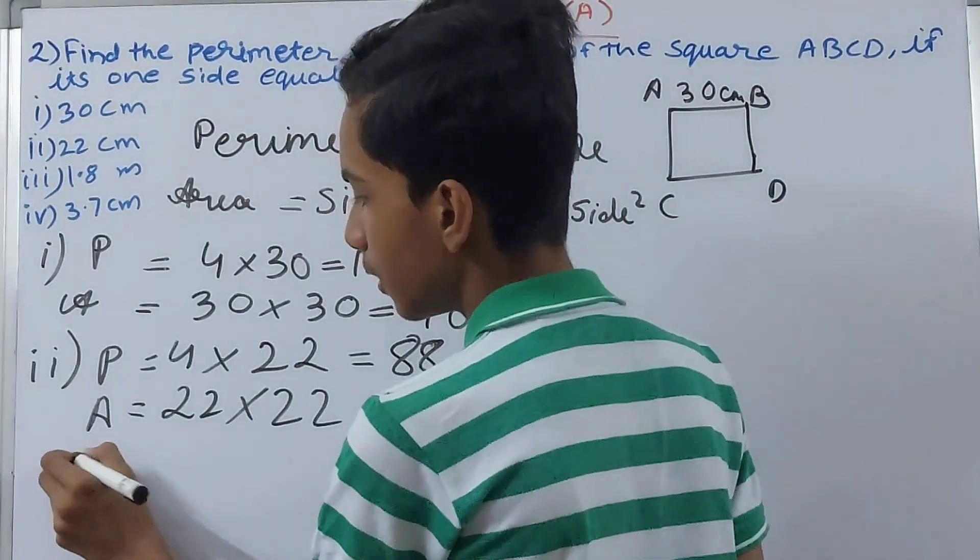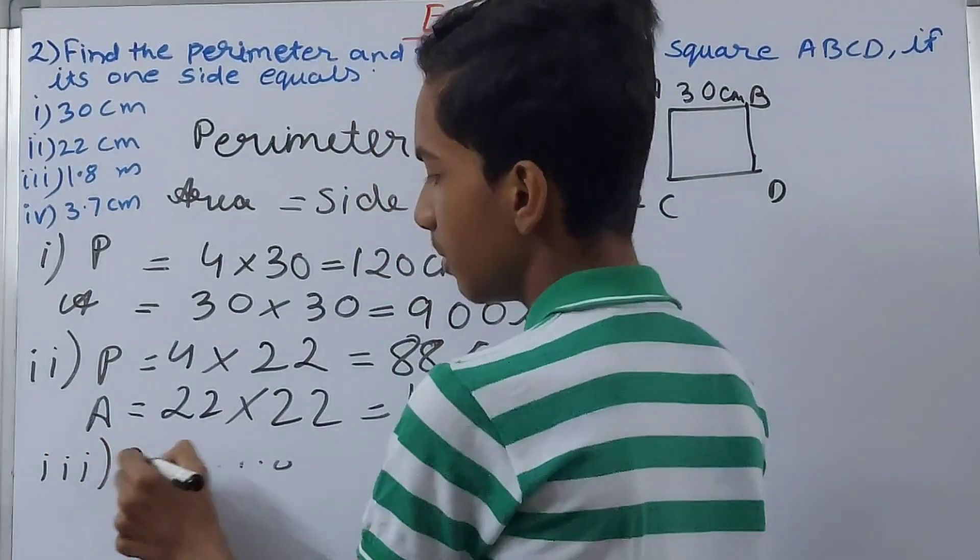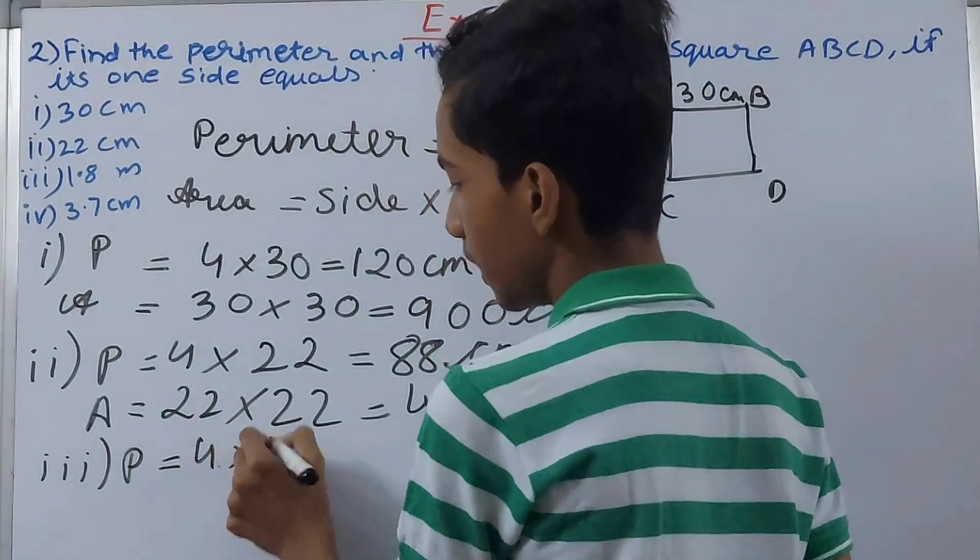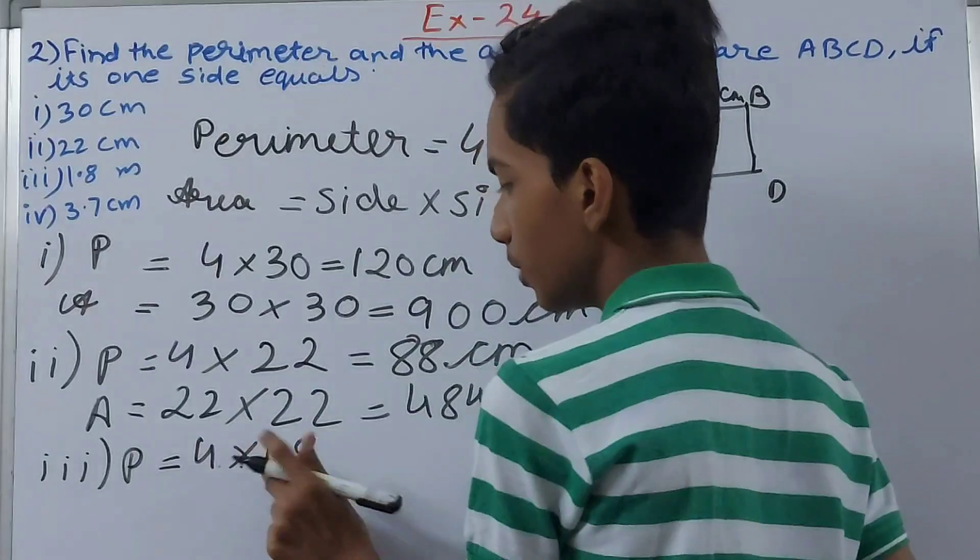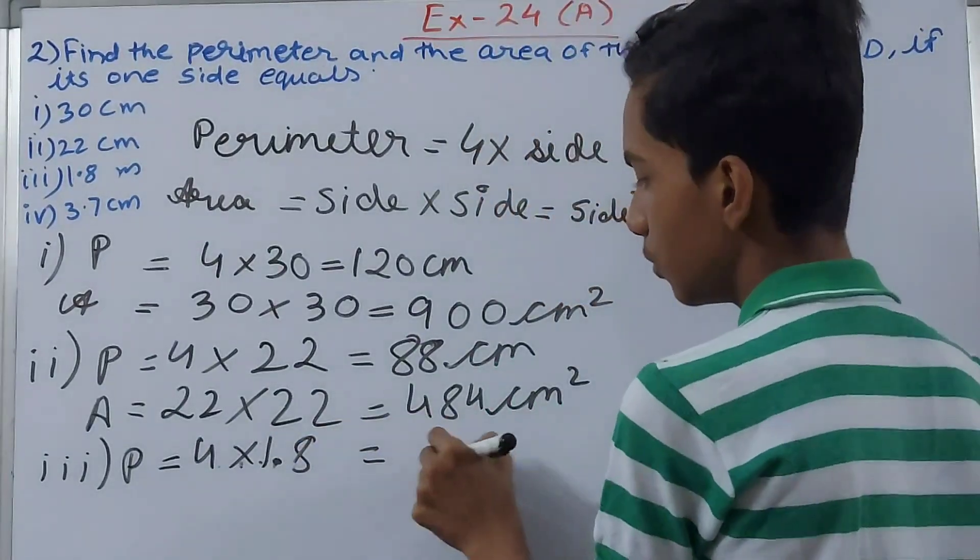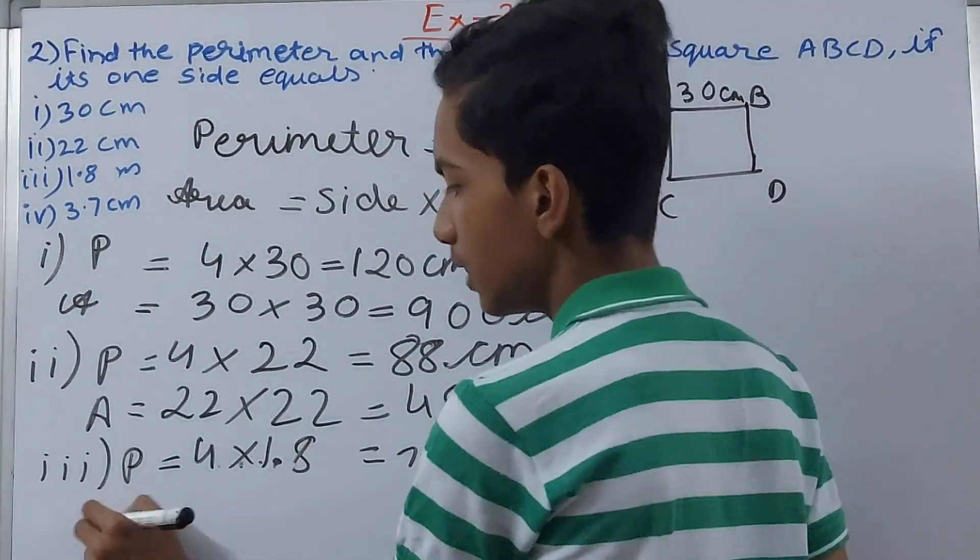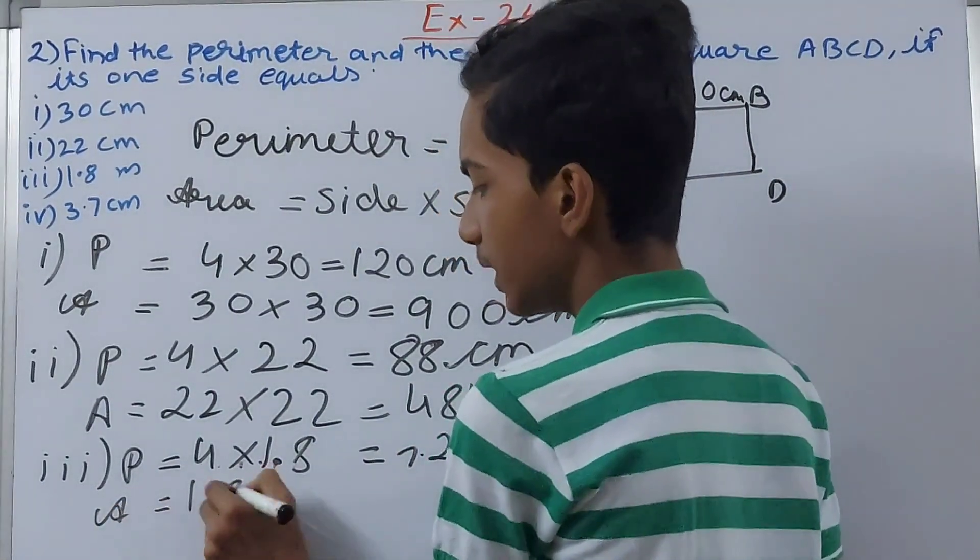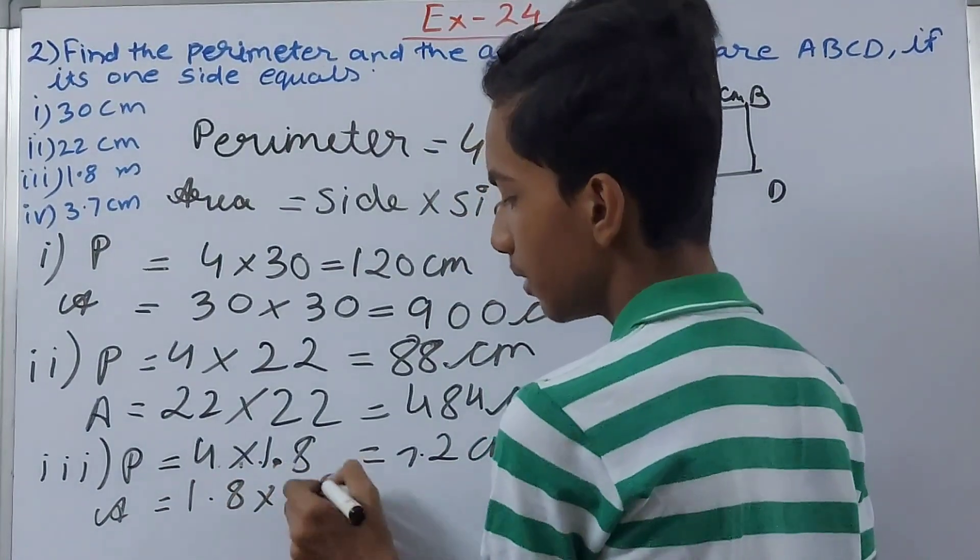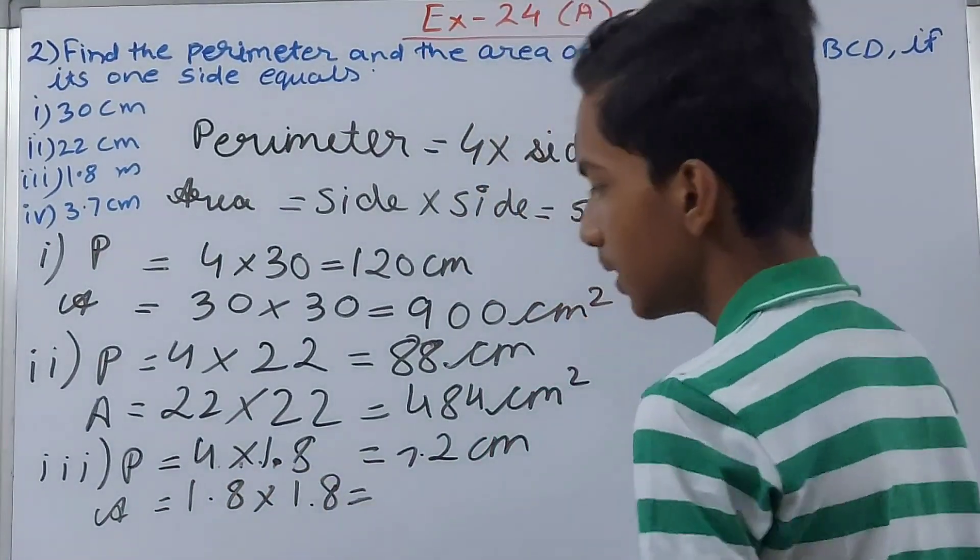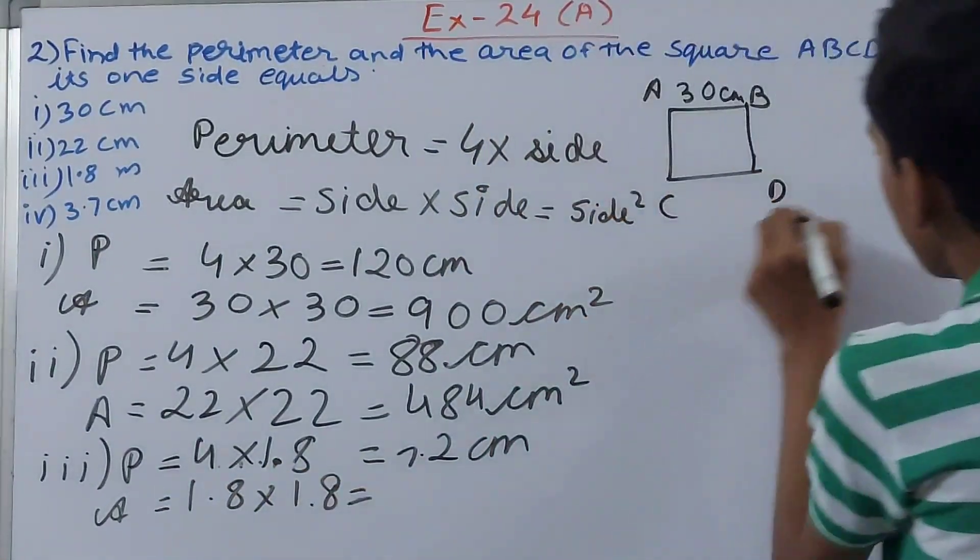In the third part, perimeter becomes 4 into 1.8, and what will this give us? 7.2 centimeter. Now the area will become 1.8 into 1.8. Let's do the multiplication here.